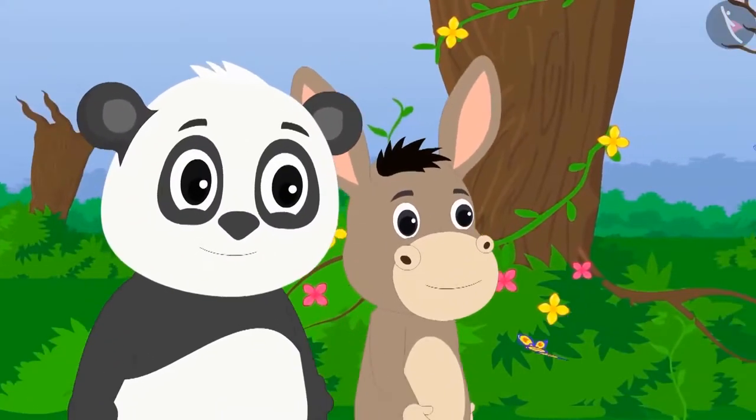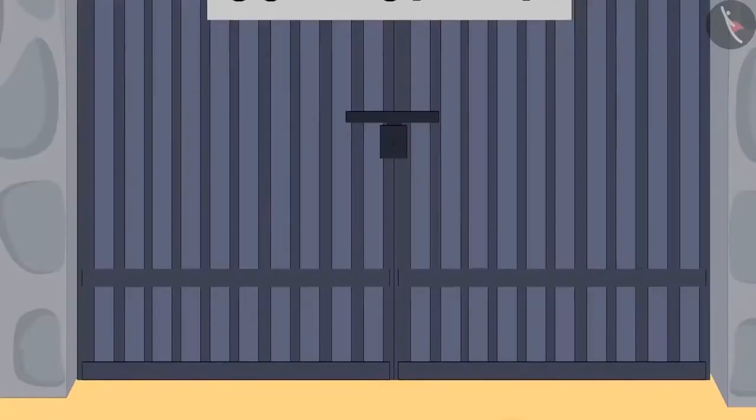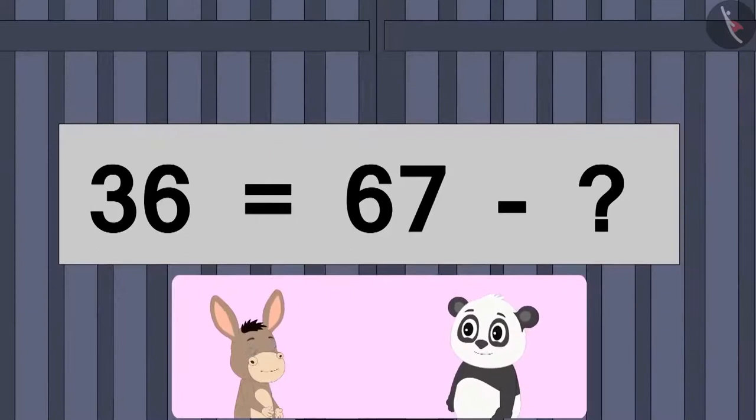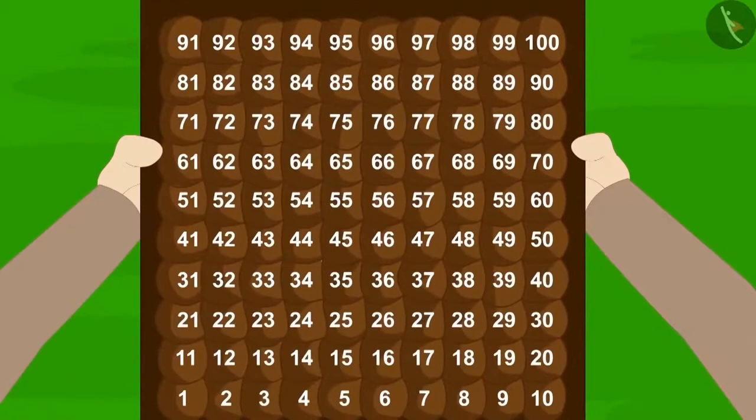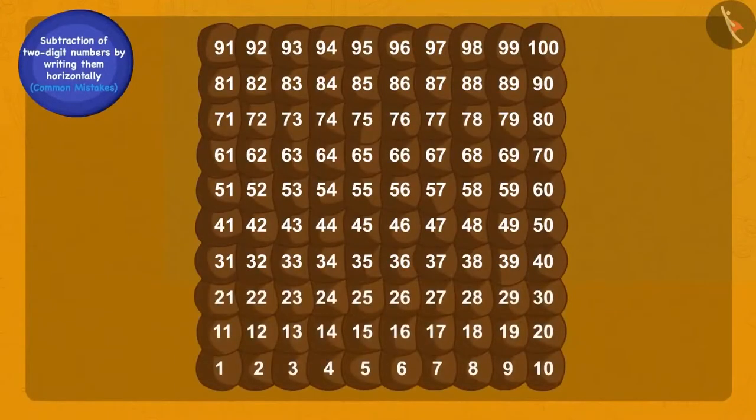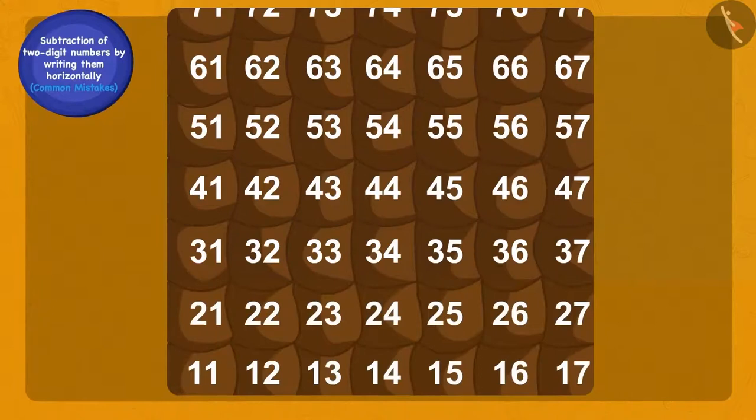Now, Golu and Bola were tired. They wanted to go home. But, the exit gate was closed and there was a puzzle written on it. Can this puzzle be solved in an easy way? Let us see how Bola and Golu find a solution to this problem. Bola has a grid full of numbers. Children, have you seen this grid before? Yes, this grid is exactly like Bunny's hundred-room house. In this puzzle, we have to find the number which, when subtracted from 67, will give 36.